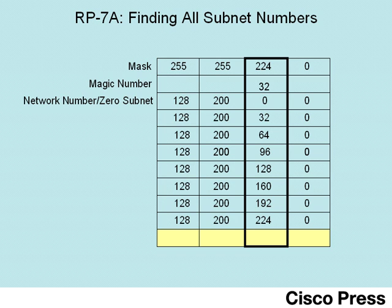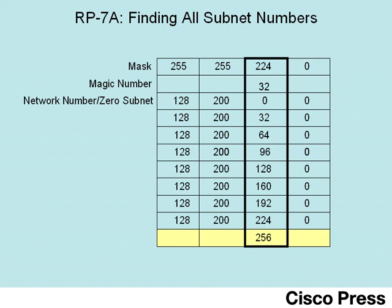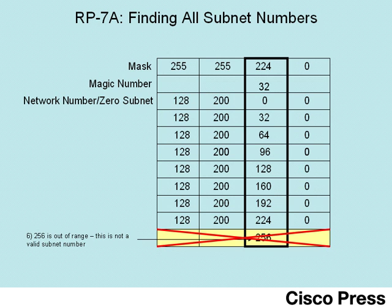We're close to the end of the table. We keep repeating the process, copying the three boring octets and adding the magic number of 32 to the previous subnet number's value. In this case, we get a value of 256 as this last subnet number. Normally you'd expect to see numbers between 0 and 255 in a dotted decimal IP address or subnet number. Step six of this process uses the fact that we've added up to a value equal to 256 as a signal to stop the process — 256 is out of range, so we don't use that subnet number.